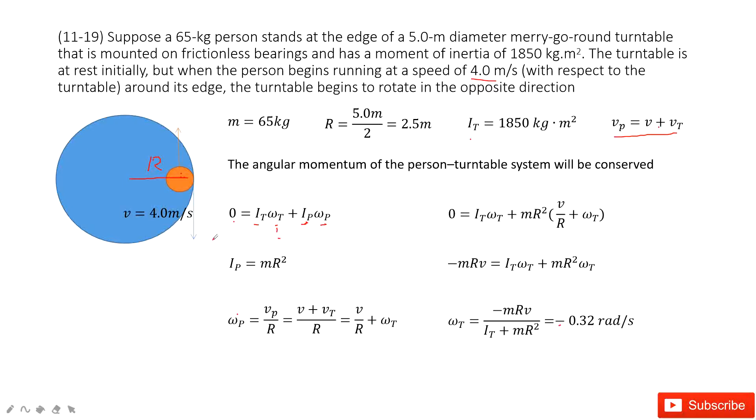The negative sign tells us the direction for the merry-go-round is opposite with the person. Because the angular momentum is conserved. Thank you.